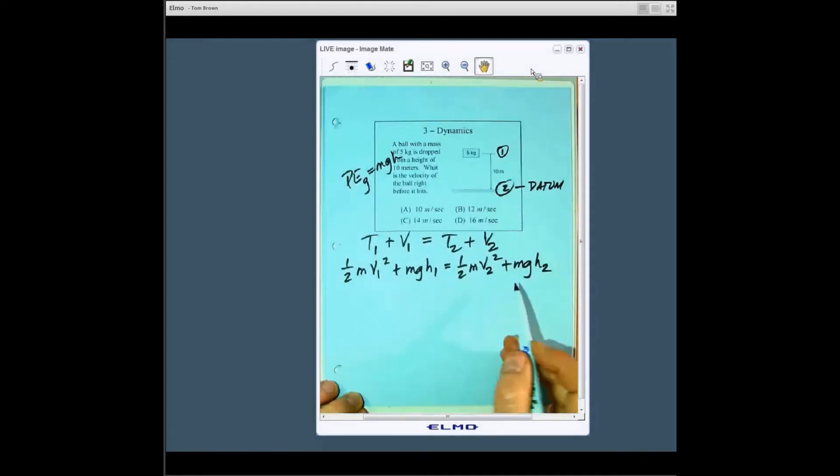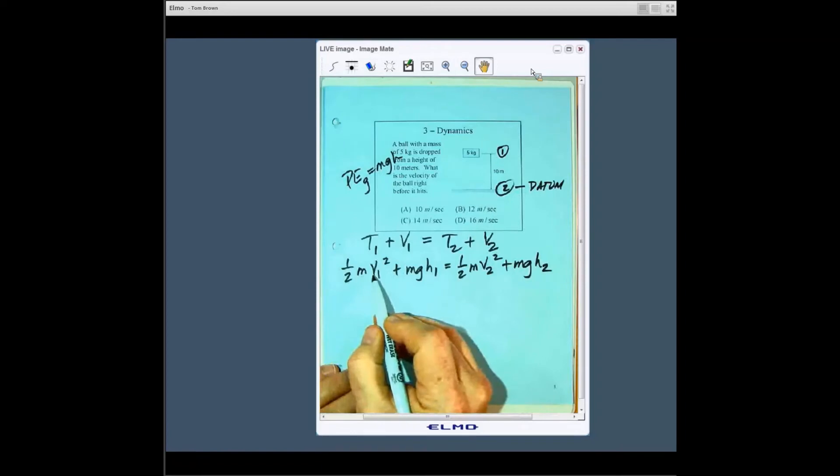So what I do underneath each one of them is say okay what do I know. Again, one of the things I meant to say earlier when I did that one with the block sliding down the incline, work energy is really one equation so you only have one unknown. Everything else has got to be known. So here we're going to release it, drop from a height of 10 meters so it's released from rest so v1 equals zero. h1 because of the datum down here, h1 is going to equal 10 meters.